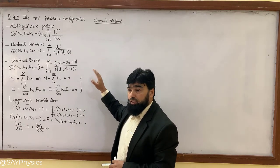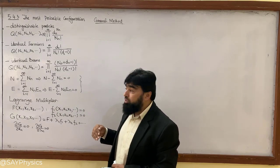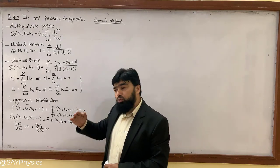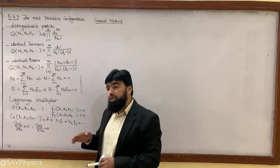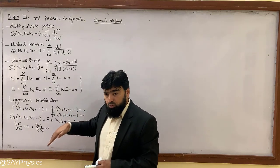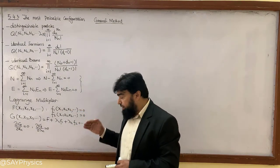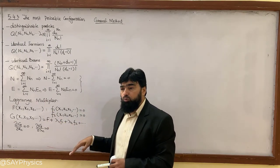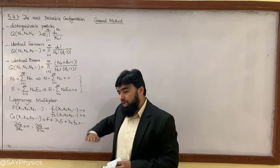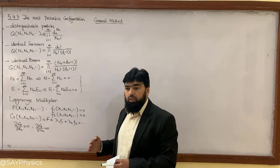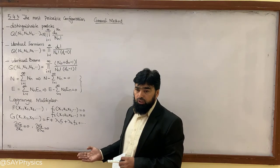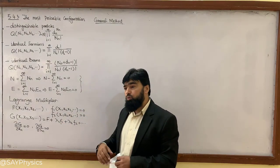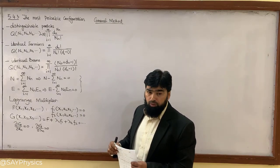Setting the first derivative to zero gives you the maximum or minimum of a function — the extreme values. Then you apply the second derivative: if the second derivative is negative, you are at a peak, so it is a maximum; if it is positive, you are at a trough, so it is a minimum. This is somewhat similar to what we will do — but here we want to maximize a function subject to a constraint.